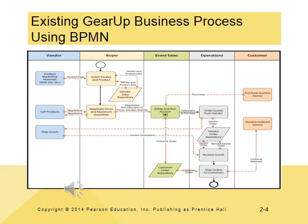Gear Up's processes only include the middle three — there's a starting point and an ending point for Gear Up. However, the entire process also includes two things they don't control: the vendor and the customer. The only thing that Gear Up really controls are those three processes. But the entire process does include both the vendor and the customer; if we didn't have vendors and customers, we wouldn't be able to complete this process.